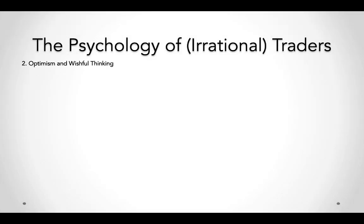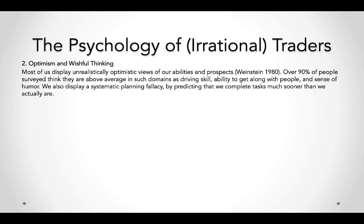Events we think are certain to occur actually occur less frequently, and even 'impossible' events occur about 20% of the time. Optimism and wishful thinking — just because you want to buy Ford at $15 hoping it goes to $20 doesn't mean it will happen. There's a fine line between being optimistic and overconfident. The planning fallacy is where we think we can complete tasks sooner than we actually can, and we anchor on ourselves believing we are above average in many domains, including investing.